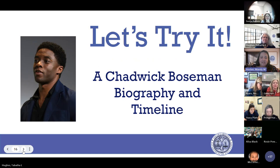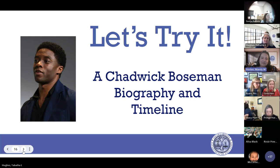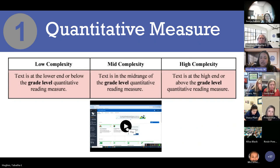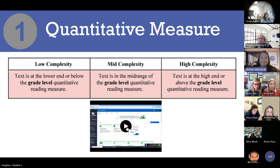Let's move on to our next section where we're going to try it. The text we're going to use today is a Chadwick Boseman biography and timeline. We love Chadwick Boseman here in South Carolina — what a great representative of our state. This text is actually pulled from our African American history calendar. We're going to talk about how to analyze the quantitative measure of a text. In the text complexity process within the standards document, you'll see this chart — a pink chart with low complexity, mid-level complexity, and high complexity based on quantitative reading measures.